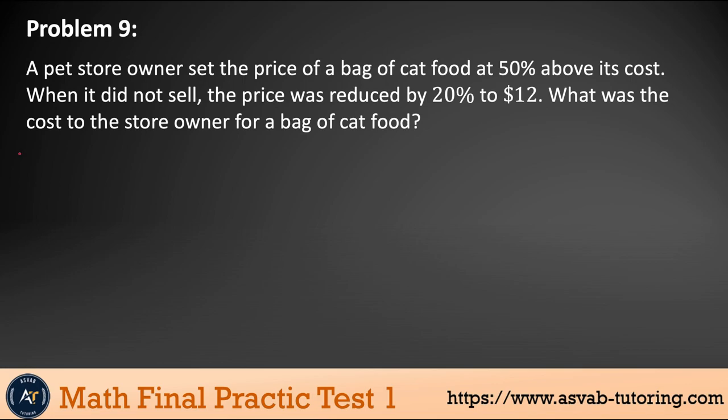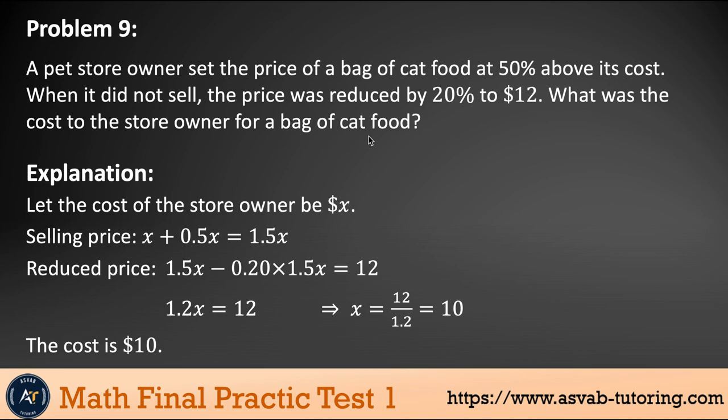Next problem. Make sure that you read the question carefully before you attempt to solving it. So the problem is a pet store owner set the price of a cat food at 50% above its cost. When it did not sell, the price was reduced by 20% to $12. What was the cost of the store owner for a bag of cat food, right? So this is a very important question. So you might see this question many times in the test in different versions of opposite candidate test, right?